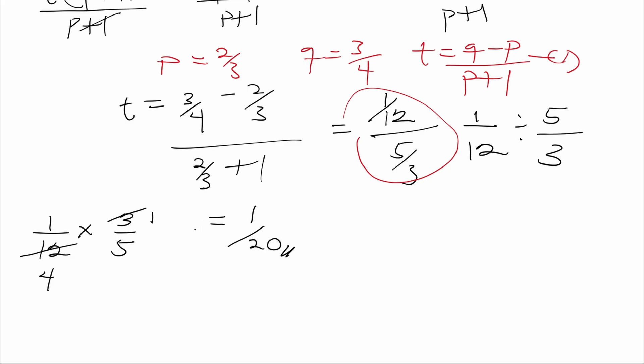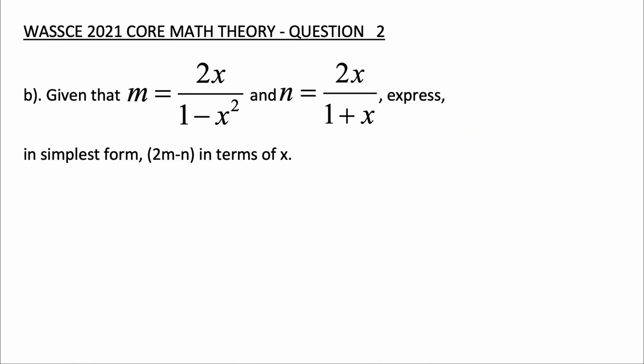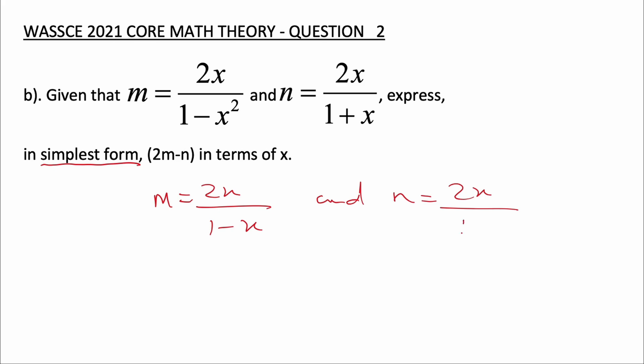This brings us to the end of Question 2a. Don't forget to like and subscribe, and leave any comments or questions in the comment section. Now for Question 2b: given that m is equal to 2x over (1 minus x squared) and n is equal to 2x over (1 plus x), express 2m minus n in the simplest form in terms of x.